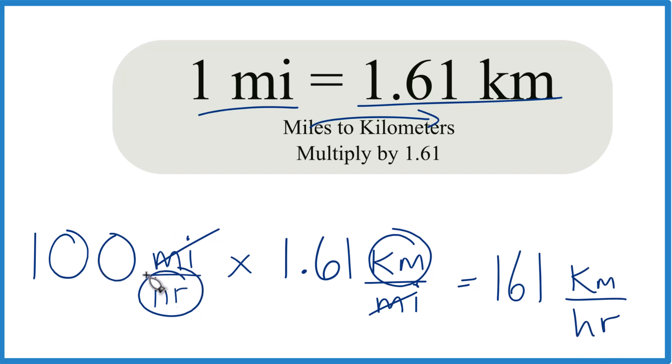So that's how you convert 100 miles per hour to kilometers per hour, or 100 mph to kilometers per hour. This is Dr. B, and thanks for watching.